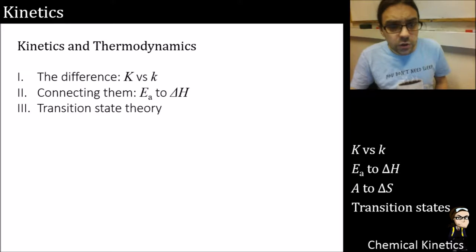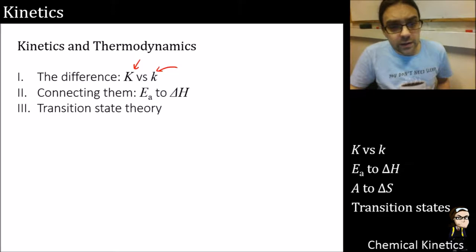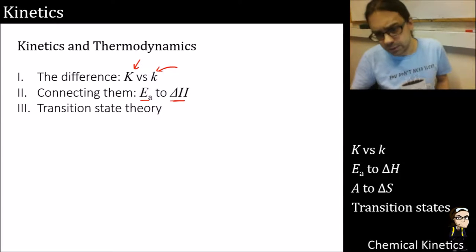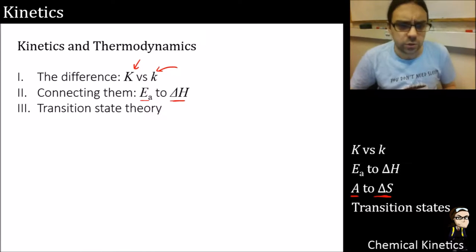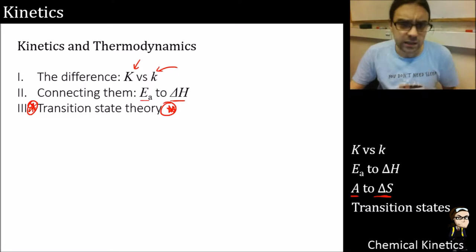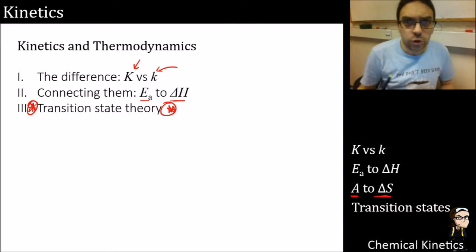We'll recap the difference between kinetics and thermodynamics and then connect them together - activation energy to delta H, and the Arrhenius factor to delta S. We'll then extend to something called transition state theory at the end, which is technically outside the scope of the course but sets the groundwork for physical chemistry.